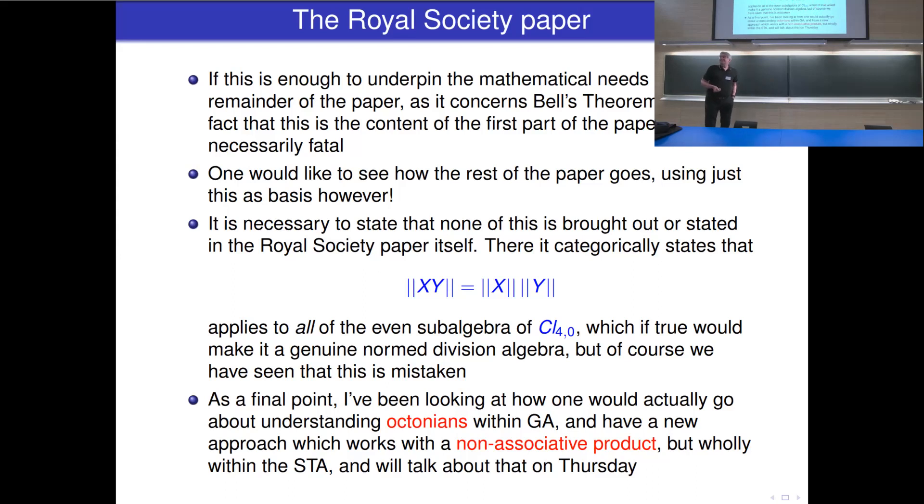So, since he in fact restricts to unit x anyway, we can summarize the entire mathematical development of section 2 of the Royal Society paper, once we strip out this false claim about the norm division algebra, as follows: if r is a rotor and s is another rotor, then the combination sr is a further rotor, since it satisfies this straightforward relation here, which is fine and does follow. So, if what I just said about composition of rotors in 4D is enough to underpin the mathematical needs of the remainder of the paper as it concerns Bell's theorem, then the fact that this is the content of the first part of the paper is not necessarily fatal. One would certainly like to see how the rest of the paper goes using just this as its mathematical basis. And it is necessary to state that none of this is brought out or stated in the Royal Society paper itself. It categorically states this norm relation applies to all the even subalgebra of CL(4,0). If that was true, it would make it a genuine norm division algebra. But we've seen A, that that's mistaken, and B, that it's impossible, so it violates Hurwitz's theorem. As a final point, this is just an advert: I've been looking at how one would actually go about understanding octonions within geometric algebra and have what I think is a new approach which works with a non-associative product, of course it has to, but wholly within the spacetime algebra. And I'll talk about that on Thursday.